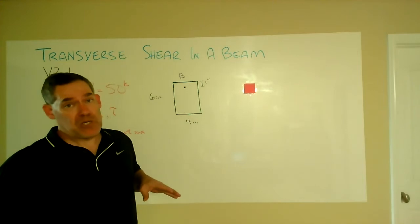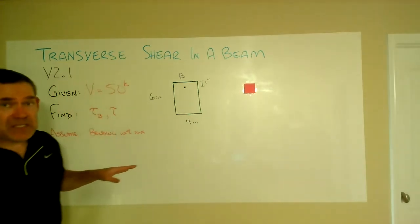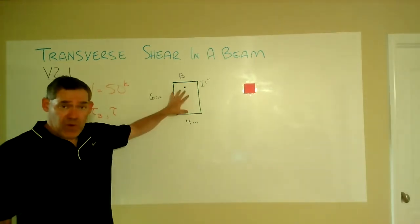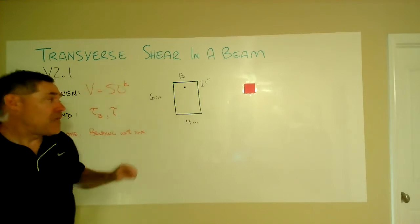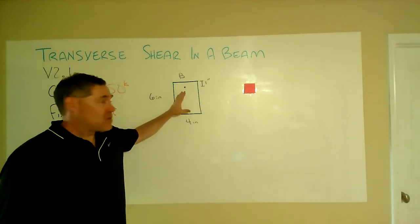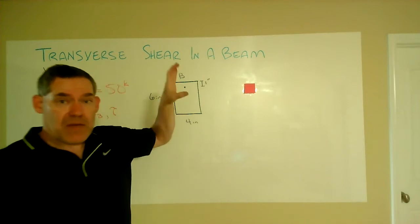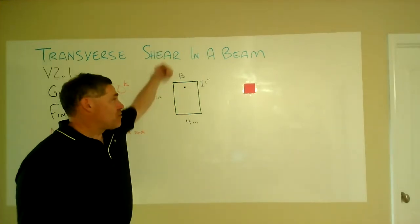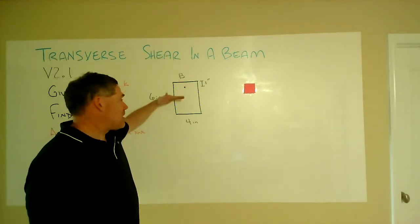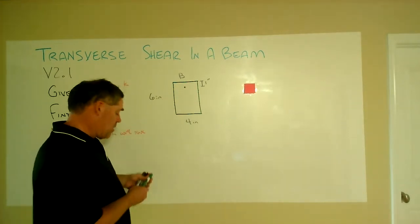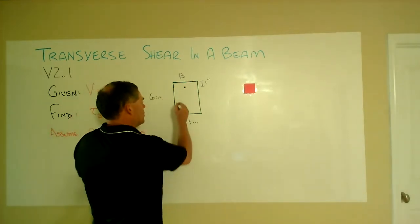Now we do need to make an assumption here. Nothing in the problem statement tells us the direction of the shear force. If this is a typical beam, this is a cross-section coming out at you, then the loading is probably in a vertical plane, meaning the bending is about a horizontal plane.